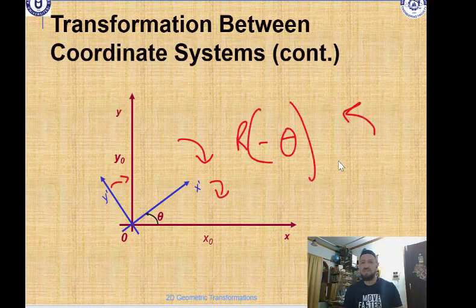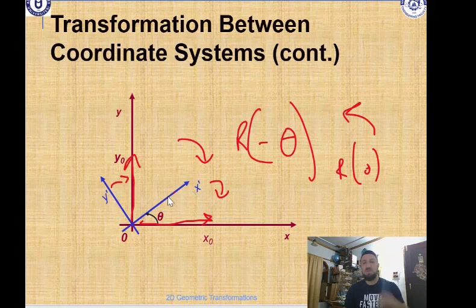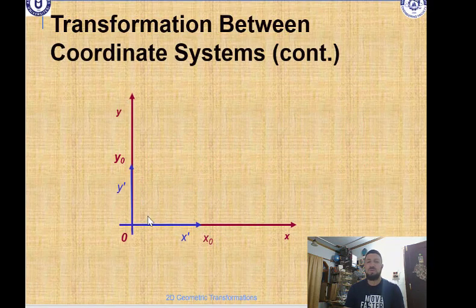Because this is a clockwise rotation, we rotate by negative theta. This brings x′ onto the x-axis and y′ onto the y-axis. So the local coordinate system x′y′ now aligns with our scene coordinate system xy.